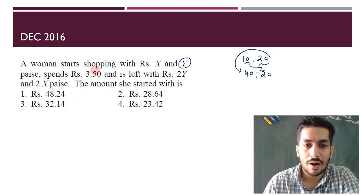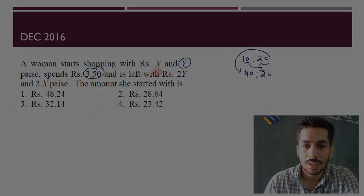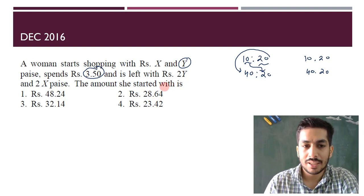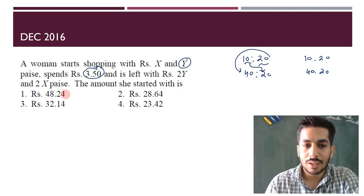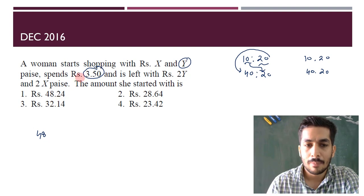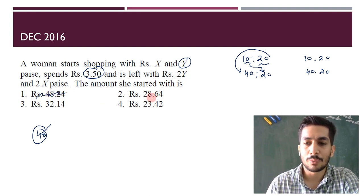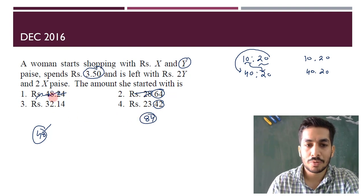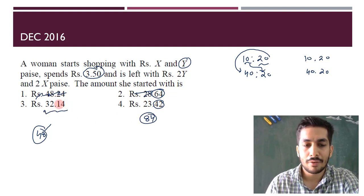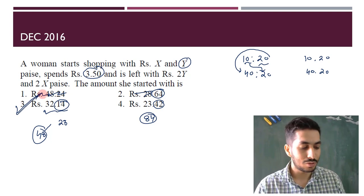After spending 3.5 rupees, just think about it: try doubling values from the options. If you try 24 paise, double is 48 — but subtracting 3.5 gives close to 44, not 48, so that doesn't work. If you try 64, double is 128 — subtracting 3.5 from 28 gives about 25.14, and you need 128, so that's out. The only option that makes sense is 32.14, because subtracting 3.5 gives 28-point-something, which is double of 14. Both these questions can be solved in under one minute.